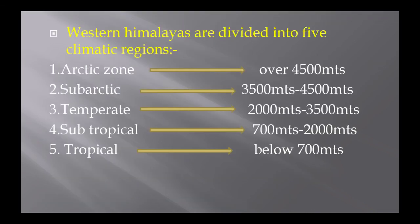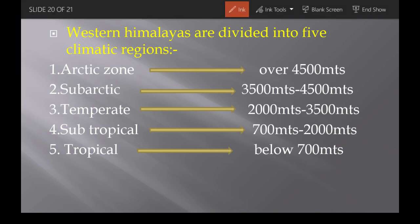The Western Himalayas are classified by climate zones based on altitude: below 700 meters is tropical; 700 to 2,000 meters is sub-tropical; 2,000 to 3,500 meters is temperate; 3,500 to 4,500 meters is sub-arctic; and above 4,500 meters is arctic zone.